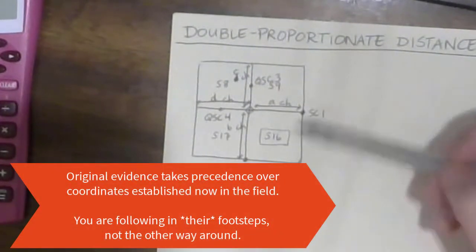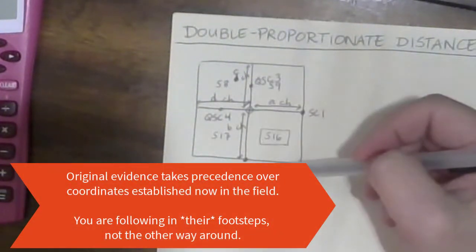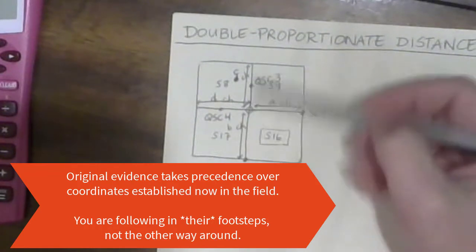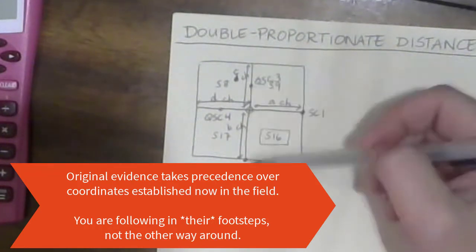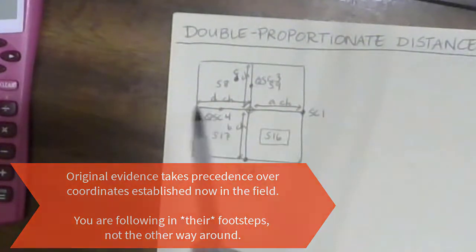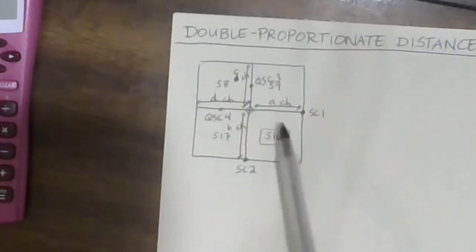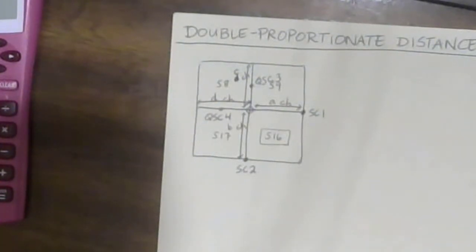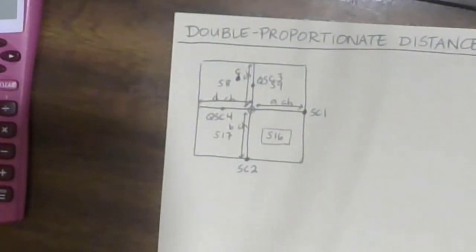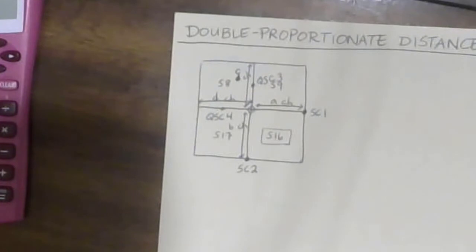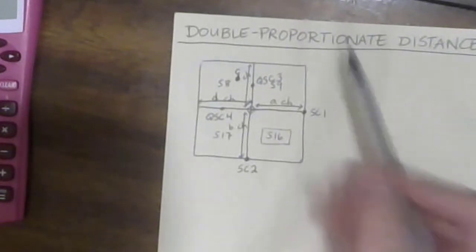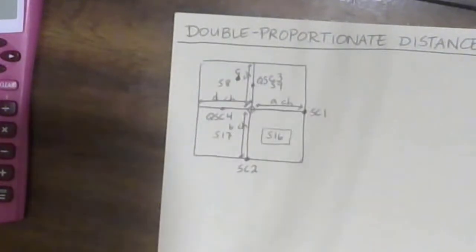Because we are given much more evidence, we don't have just one line's worth of data — we've got two. So we're going to use as much of the evidence that we're given as possible. That's what we want to do. We want to follow the original surveyor's footsteps. So we're going to make two proportions.